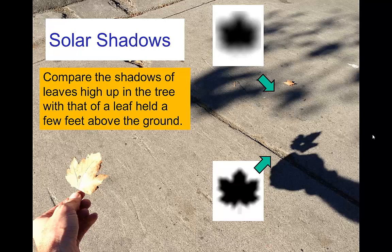The sun also produces shadows that have penumbra. So when we hold a leaf close to the ground, the shadow is fairly sharp. But when the leaf is high up in the tree, so it's farther away,